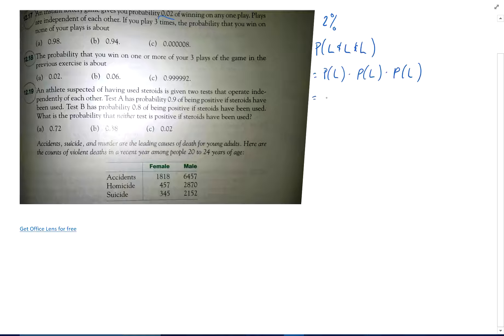So that's going to be the probability that I lose. Well, since I have a 2% chance of winning, I have a 98% chance of losing times 0.98 times 0.98.